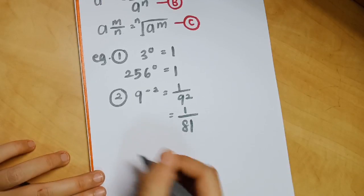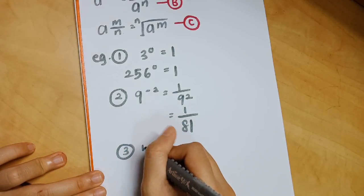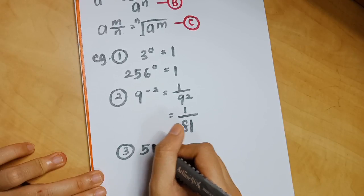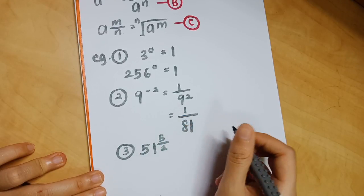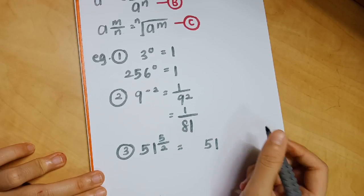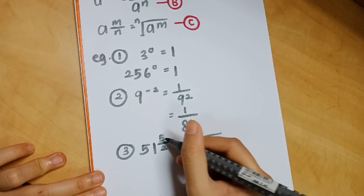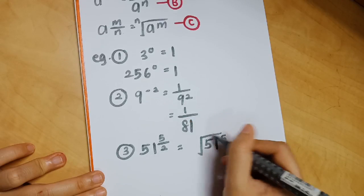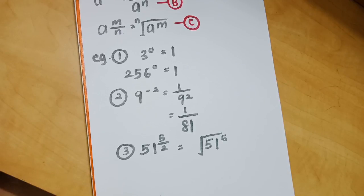For concept C, we have 51 to the power of 5 over 2. To convert it, you keep 51 and place it under a square root sign, where the numerator 5 goes inside and the denominator 2 is outside — but since square root already means 2, you don't write it.